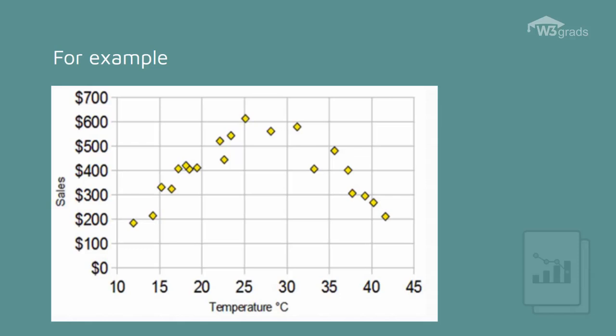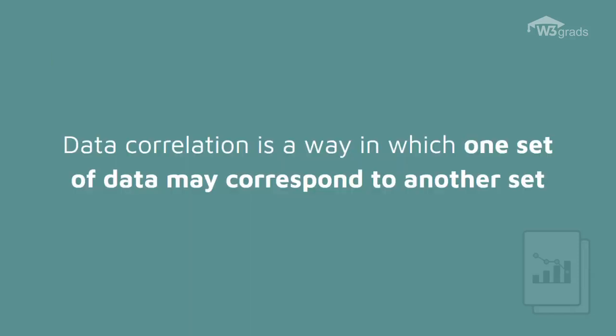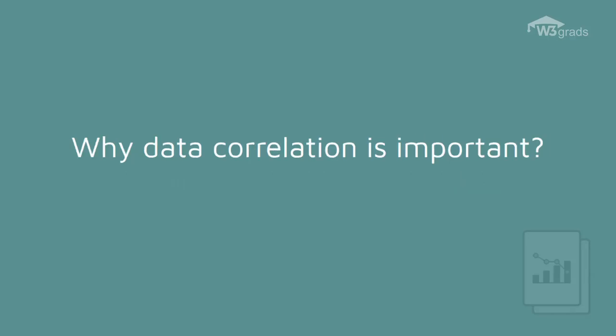Data correlation is the way in which one set of data may correspond to another set. In machine learning, you can think about how your features correspond with your output. So why is data correlation important?